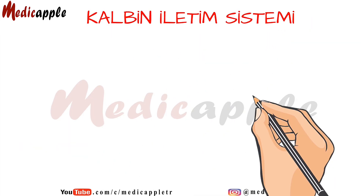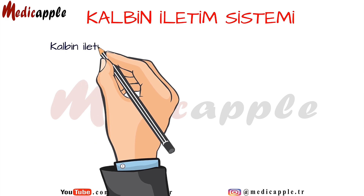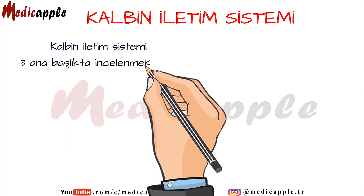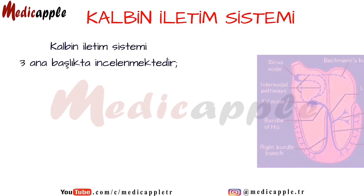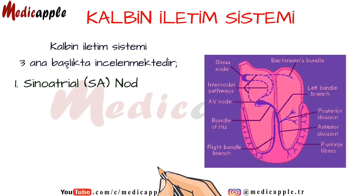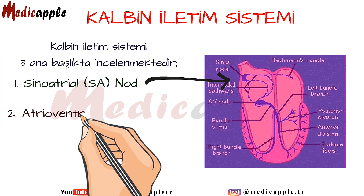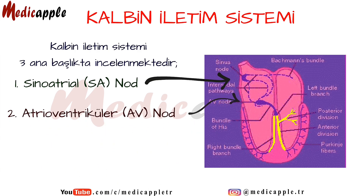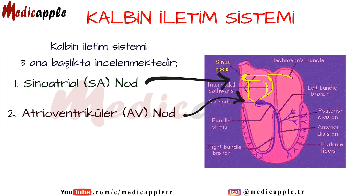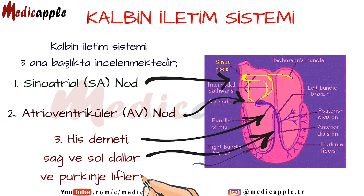Conduction system of the heart. The conduction system of the heart is examined under three main headings: the sinoatrial (SA) node, the atrioventricular (AV) node, and the bundle of His with its right and left branches and Purkinje fibers.